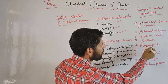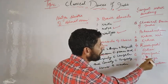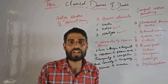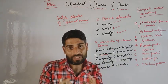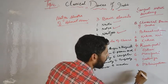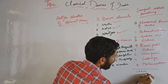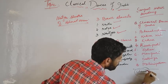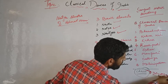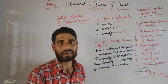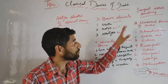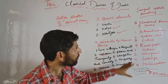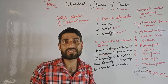The Ministry of Culture recognized nine classical dances of India because they included Chhau dance in the list. The Sangeet Natak Academy recognizes only eight classical dances. We will now discuss all eight classical dances in detail.